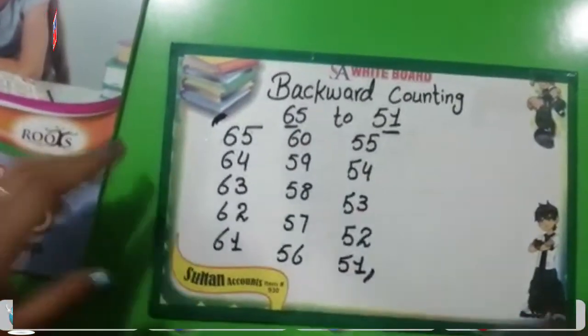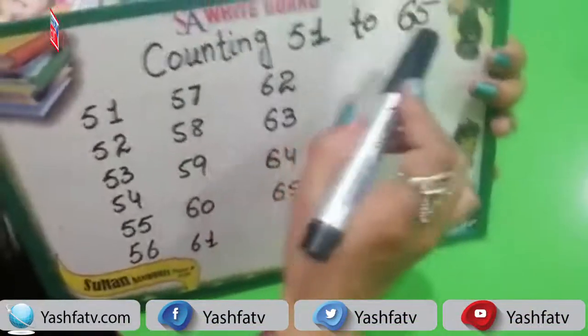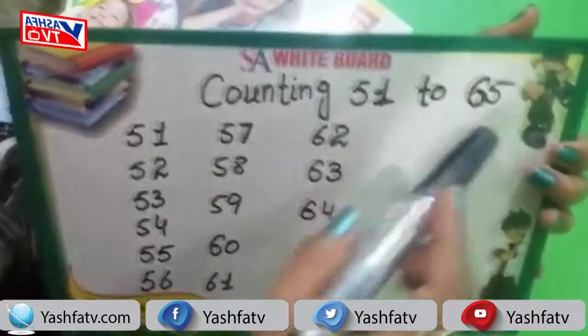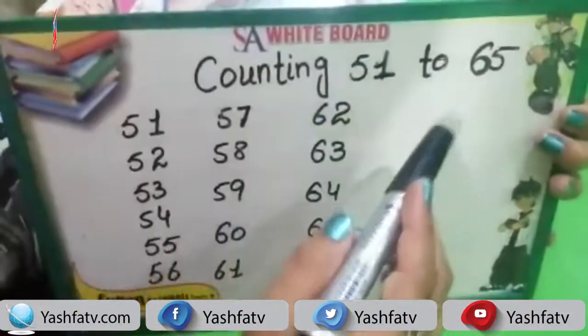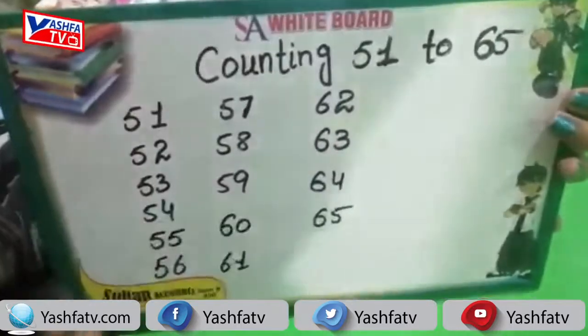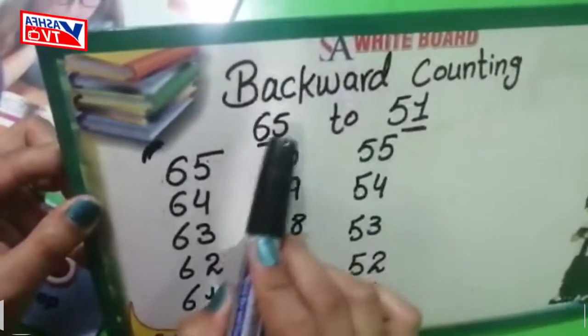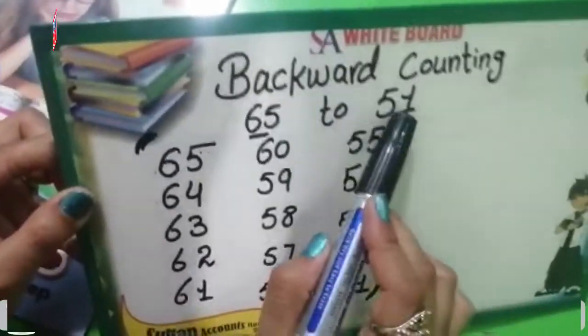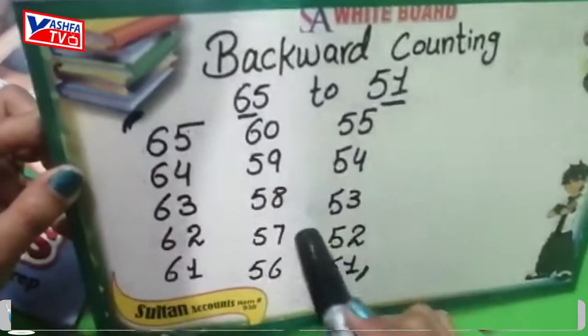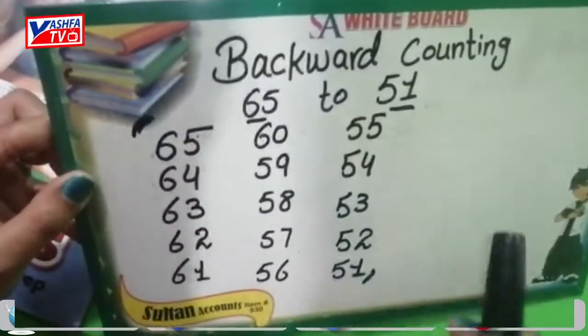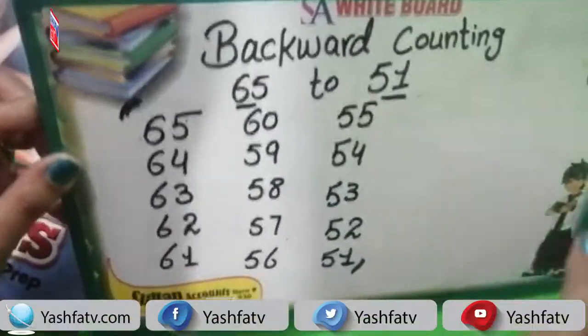So students, you have learnt the counting from 51 to 65 with numbers and number names, and you also learnt the backward counting from 65 to 51 with their number names and spelling. Allah Hafiz.